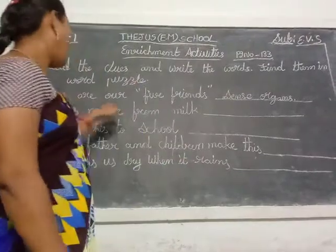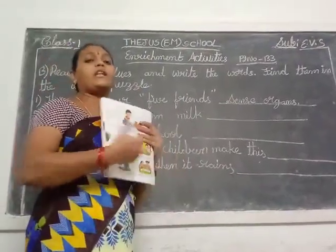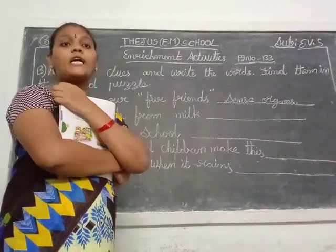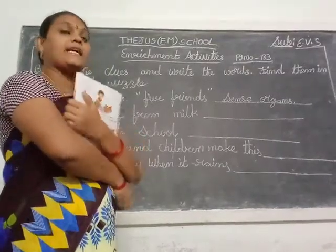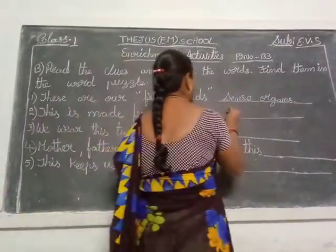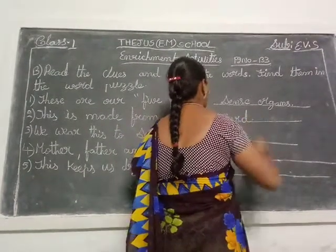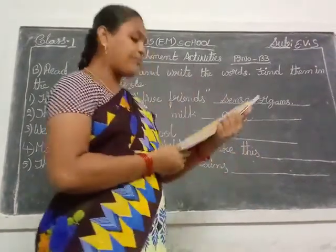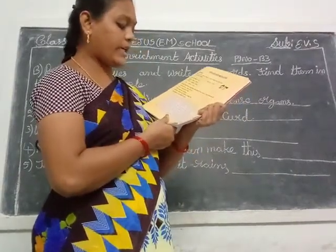Next — this is made from milk. What is the product made from milk? Curd. You eat curd, right? So, curd — you write here. And here you circle the word curd.